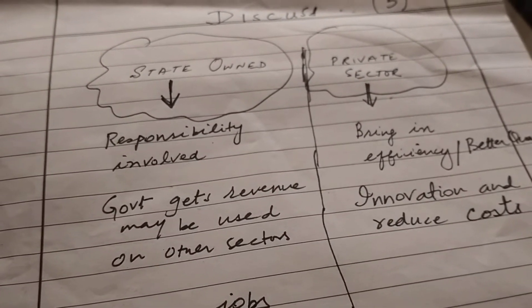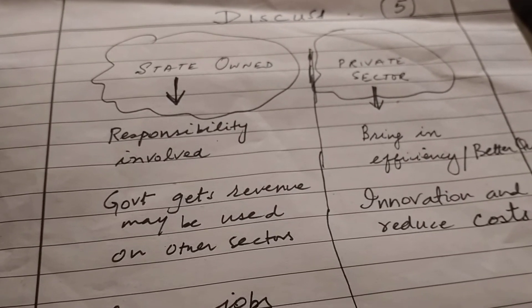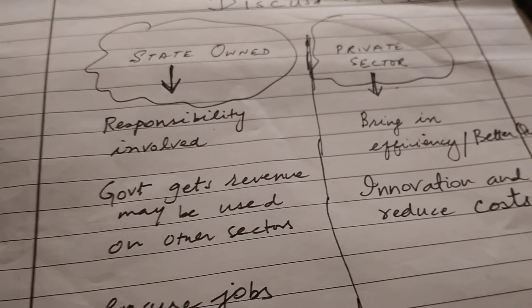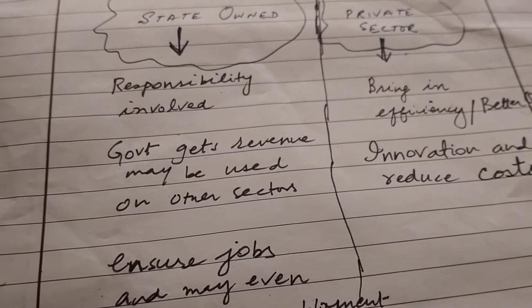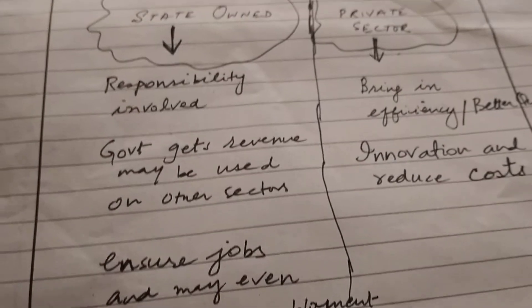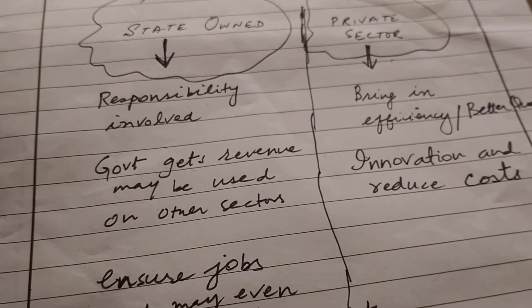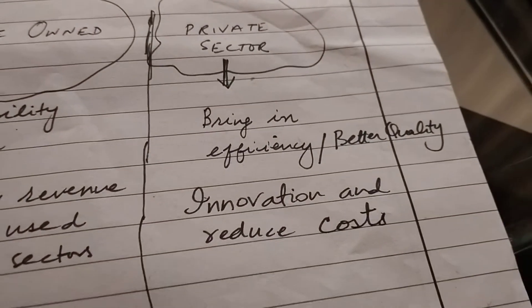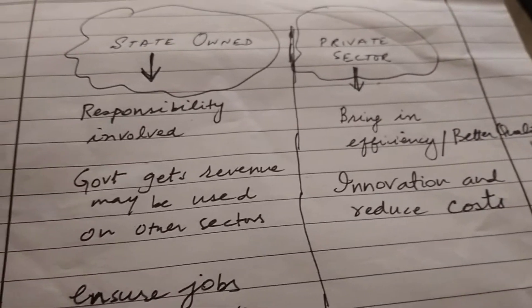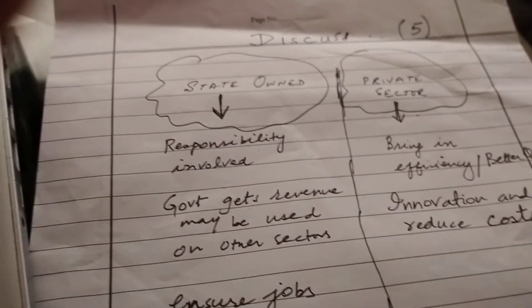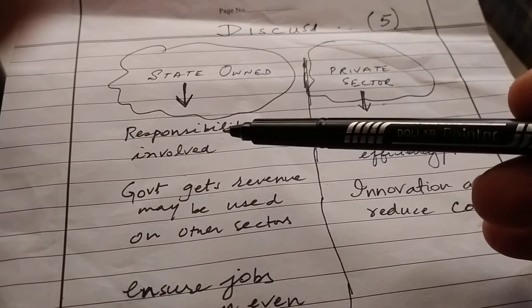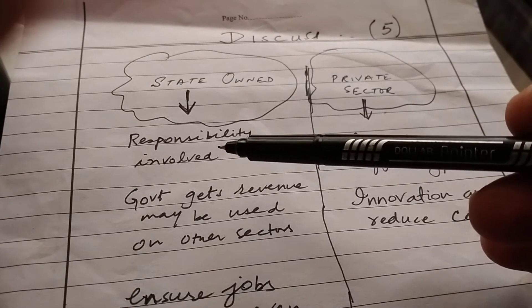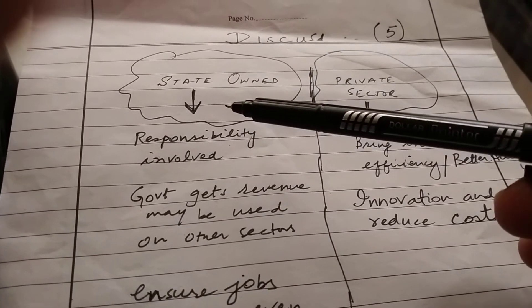I have written three points in favor of the airline industry being controlled and owned by the government — that is, being state-owned. The first point is that there is responsibility involved, and the government will always be looking for welfare maximization, so things will be more secure.